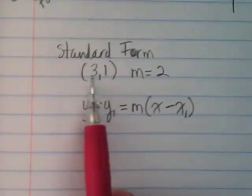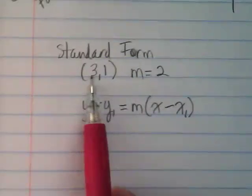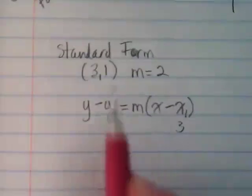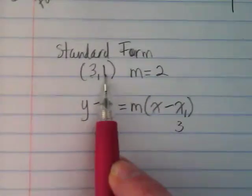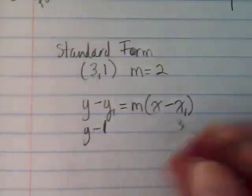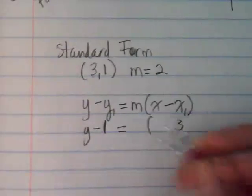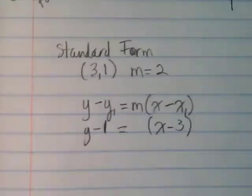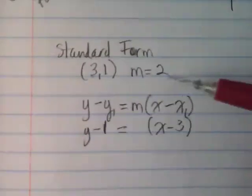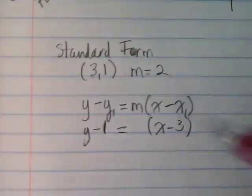Is the 3 the x or the y in this? It's the x. So it's going to go here. And the 1 is the y. So it's going to go here. And then what's left to put in? The slope here is 2.